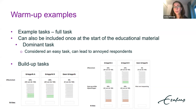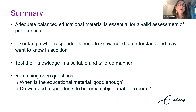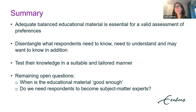Alternatively, researchers can consider including build-up tasks that include part of the attributes — for example, only effectiveness for flu vaccinations, with three flu vaccination alternatives and two attributes, building up until we have the full choice task. In summary, adequate, balanced educational material is essential for valid assessment of preferences in stated preference surveys. We need to disentangle what respondents need to know, what they need to understand, and what they might want to know in addition when designing training materials.